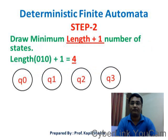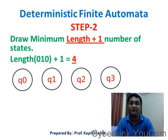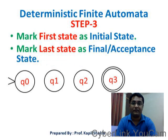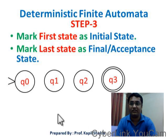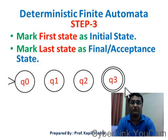Step 2: draw minimum length plus one number of states. The length of the minimum string is 3, plus 1 equals 4. So we have drawn 4 states. Step 3: mark the first state as the initial state and the last state as the final or acceptance state. You can see this is the initial state and Q3 is marked as the final state.